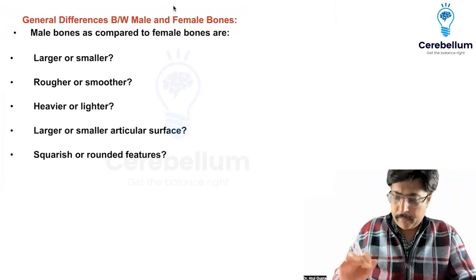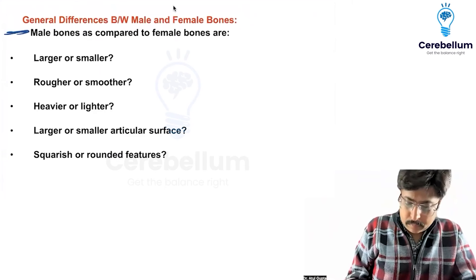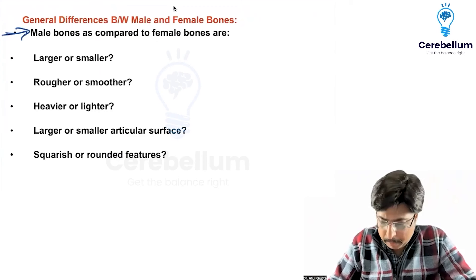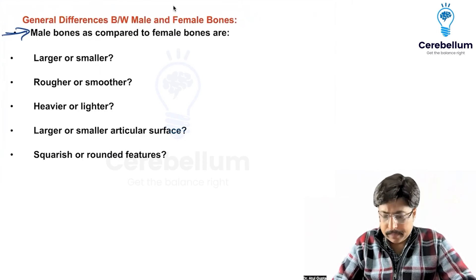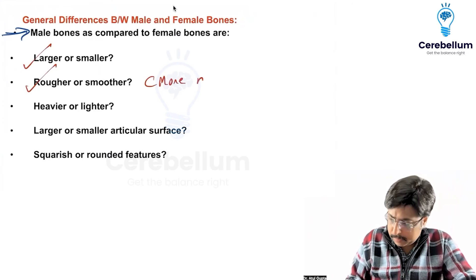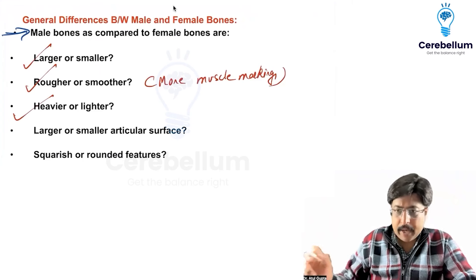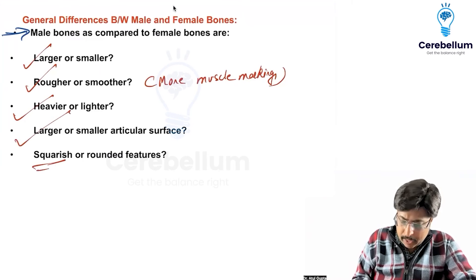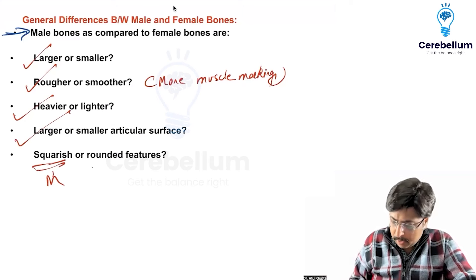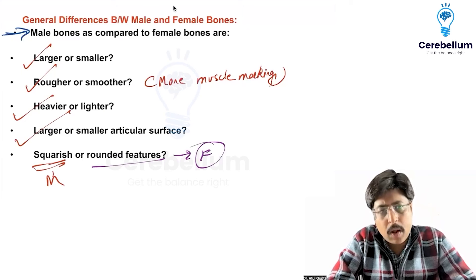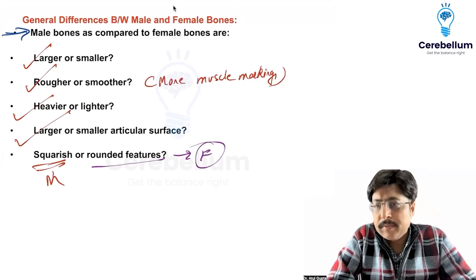What are the general differences between male and female bones? Male bones, as compared to female bones, are larger, rougher due to more muscle markings, and heavier. They have a larger articular surface and square features. Females, on the other hand, have roundish features. So many questions you will be able to solve just based upon these general rules.